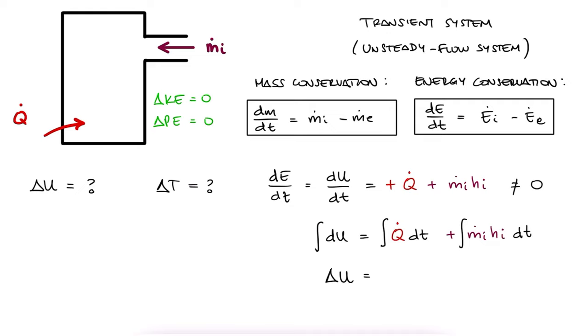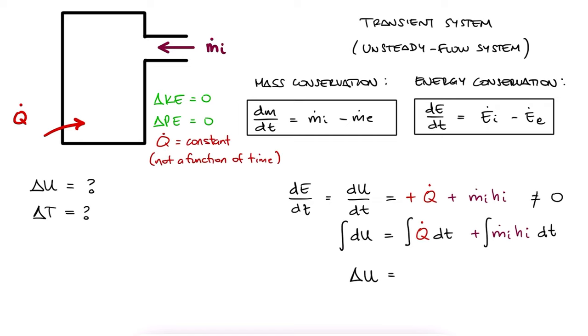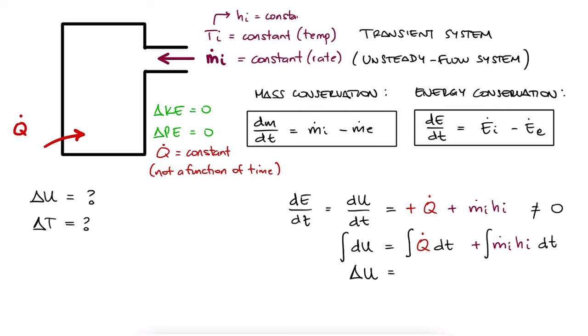Now, specifically for each case, we would have to check if the terms on the right are not changing with time, and if they're not, for example, if the heat being transferred to the tank has a constant rate, and the mass flow is coming at a constant rate and temperature, meaning constant specific enthalpy, we can just bring those out of the integral to have them multiply a delta time term.